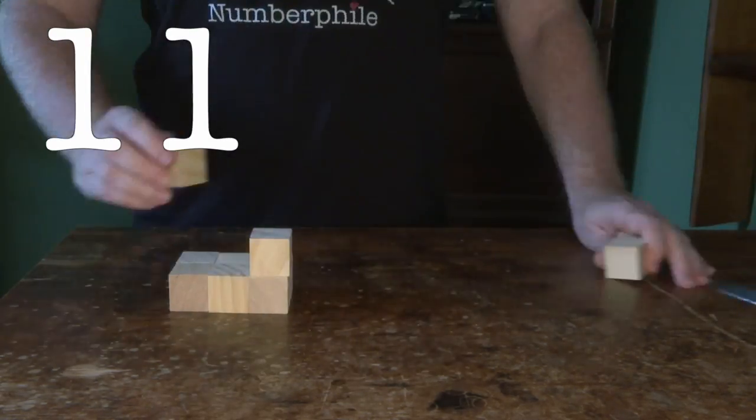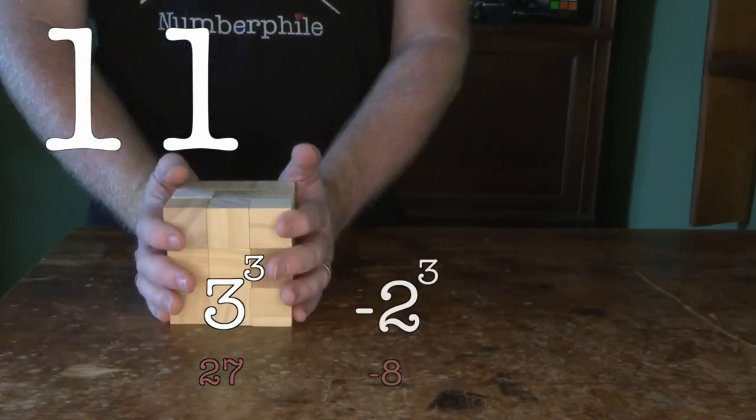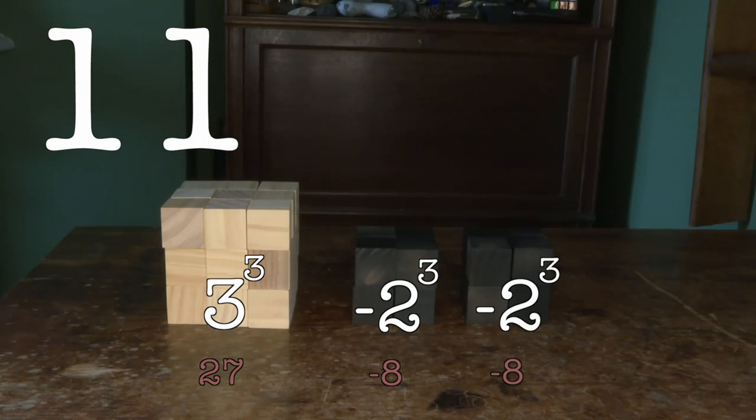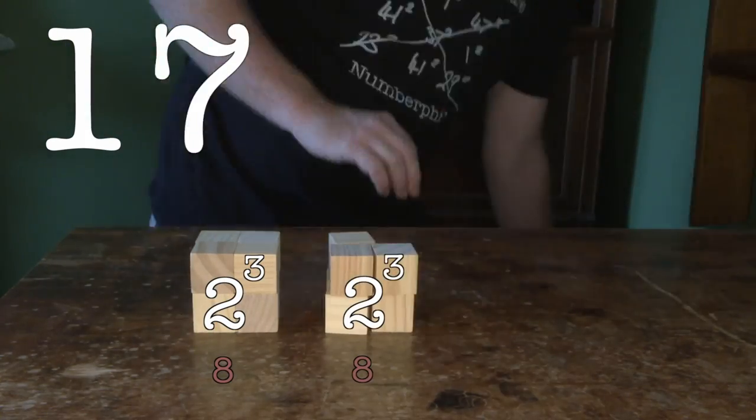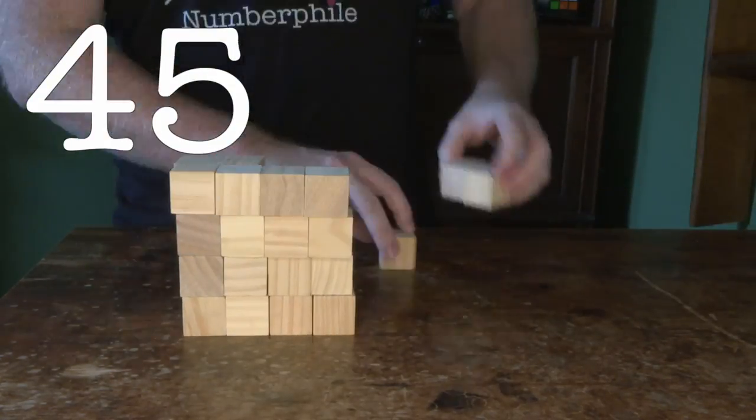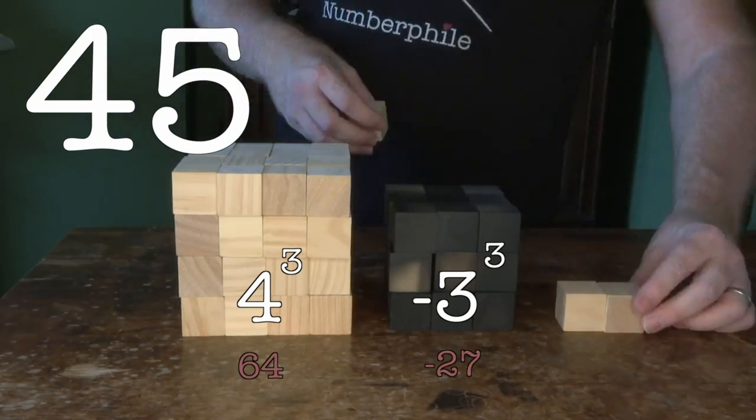11 can be 3 minus 2 and minus 2. That's right, you can use negative numbers as well. 17 is as simple as 2, 2 and 1, while 45 can be 4 minus 3 and 2.